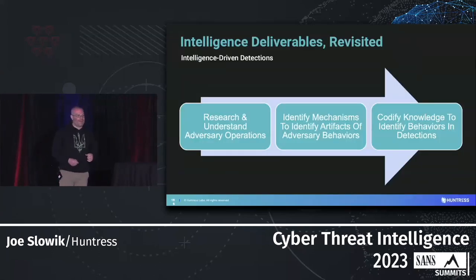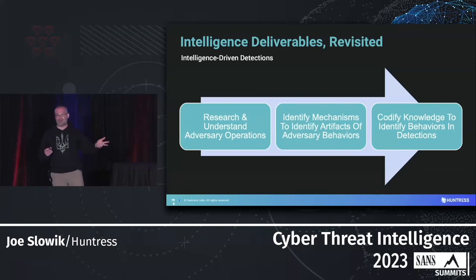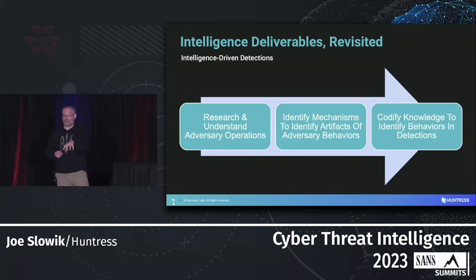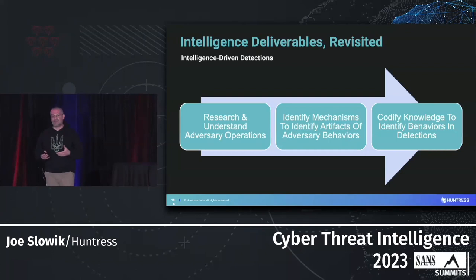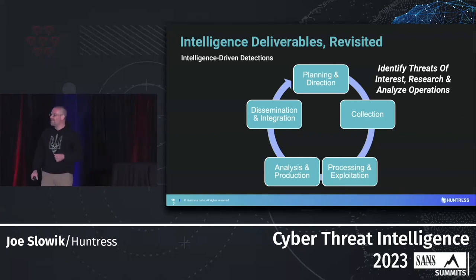Let's revisit our intelligence deliverables. We research and understand adversary operations to identify mechanisms or artifacts of adversary behaviors — the touch points visible within our telemetry. Maybe you only have network visibility: netflow, DNS logs, and proxy logs. That's honestly not far off from a lot of organizations. We need to figure out how adversary operations would look in the telemetry available to us, and once we fuse that understanding, codify that knowledge into some sustainable, lasting fashion that benefits our security teams.